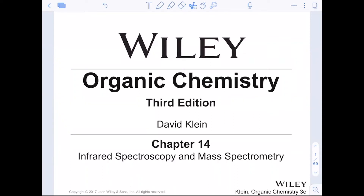Hi, everyone, and welcome to chapter 14. This is our first chapter we'll be discussing this semester. What's really important about this chapter being first is that it's a way for us to start to identify how chemists in real life identify molecules, how do we visualize them, how do we do a reaction in the lab and then say we did it correctly. How do we know when we mix two clear liquids together that we actually did the right chemistry? That is answered with two different types of instrumentation in this chapter: infrared spectroscopy and mass spectrometry.